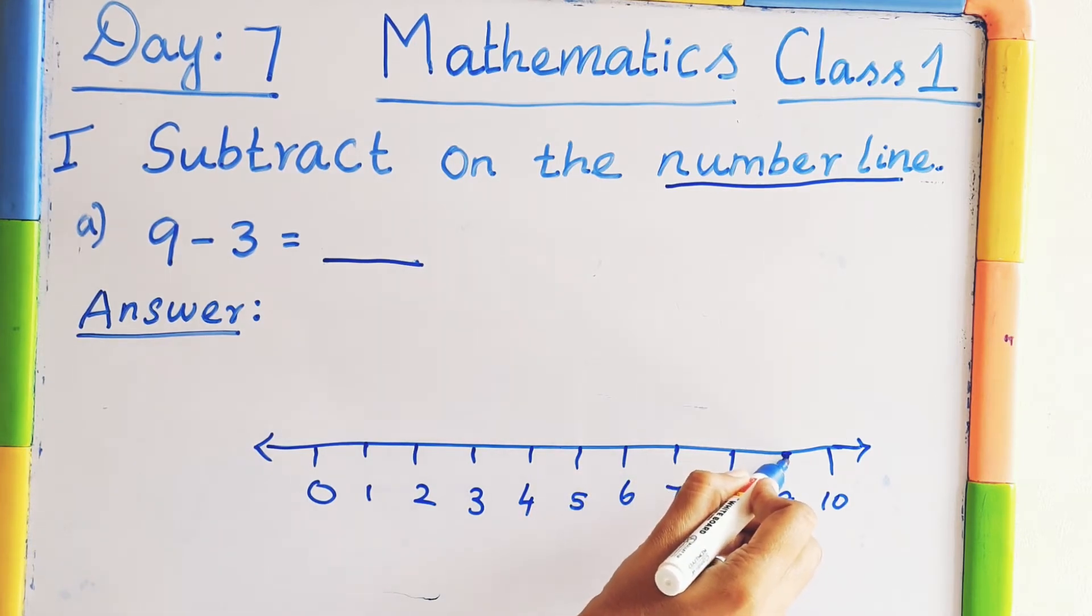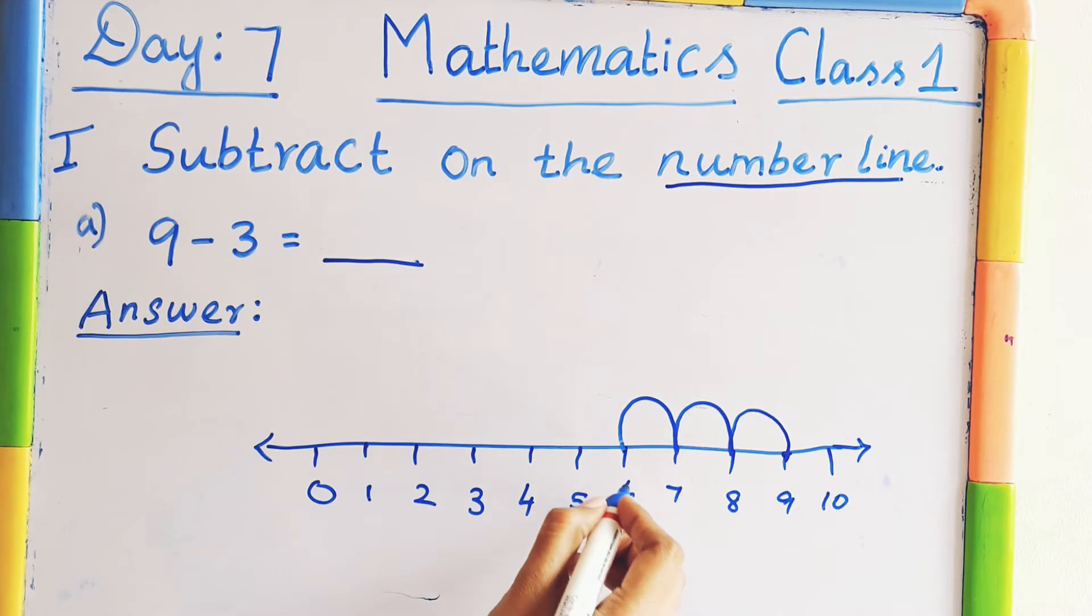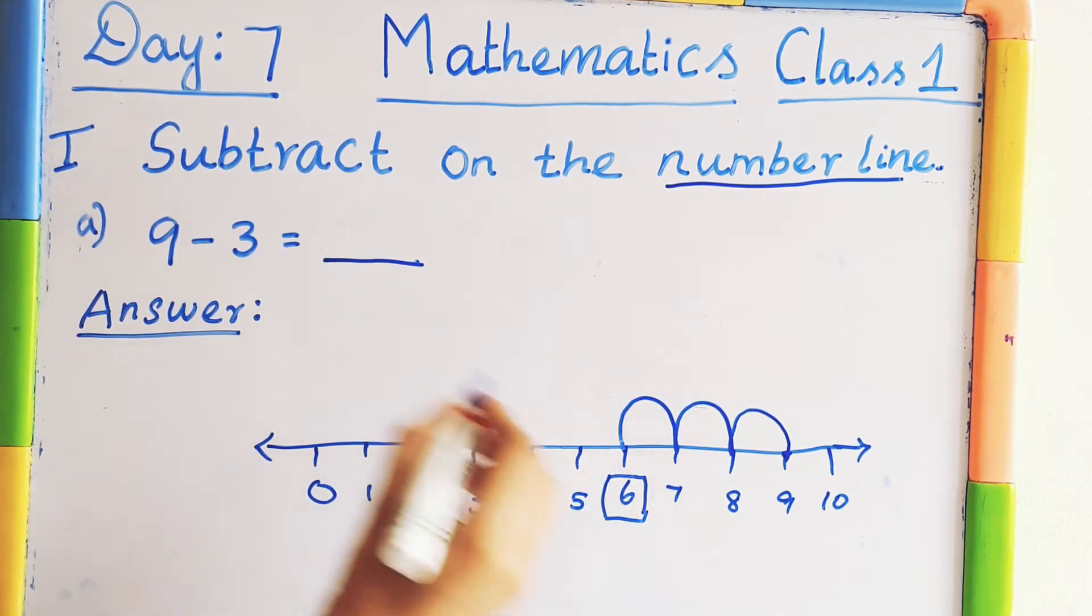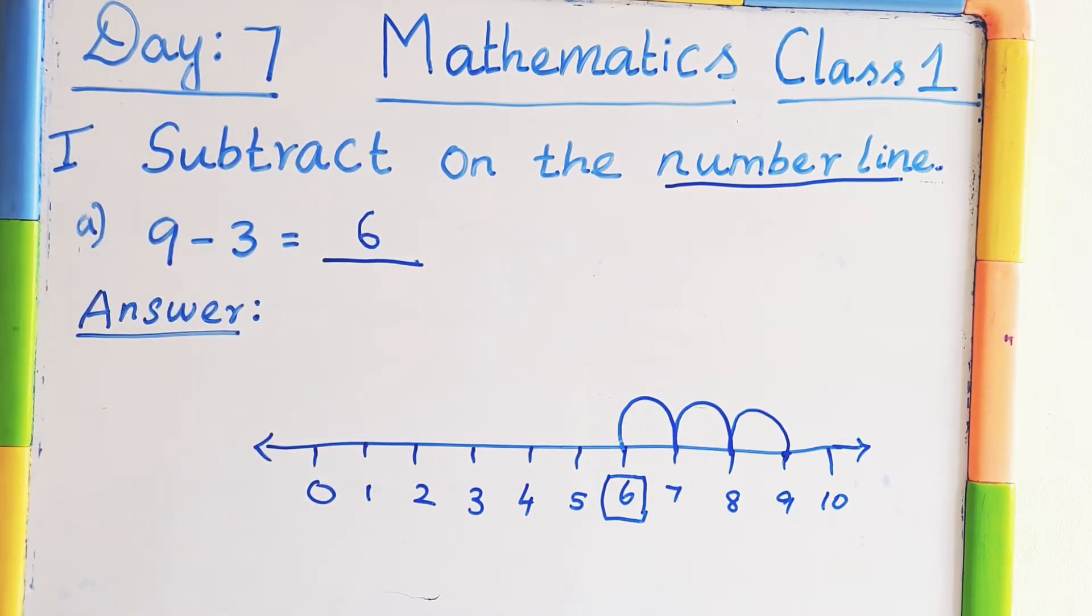So shall we start now? 1, 2, 3 curves. So we drawn the 3 curves. Where we reach now? 6. So the current answer is 6. 9 minus 3 equal to 6.